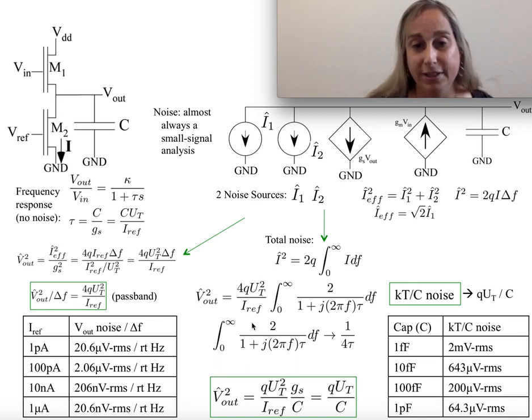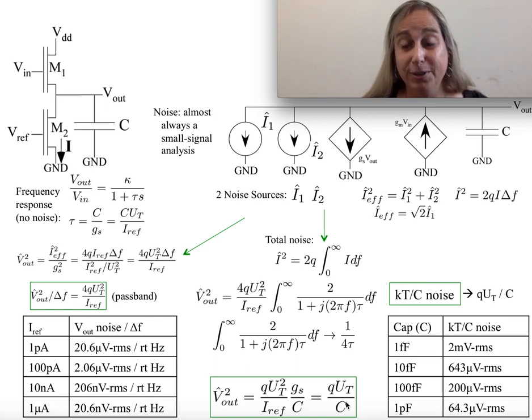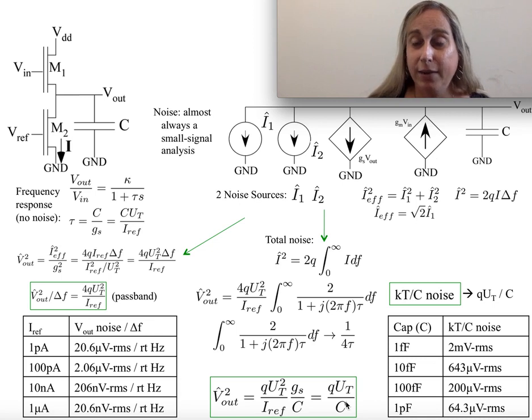When I'm done solving this, that noise value squared is q·uₜ over C. Now remember that uₜ is kT over q, so you'll see this often talked about as kT over C noise. First thing to understand: it's not a secondary noise source, it is a result of solving this.